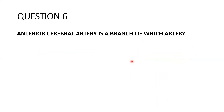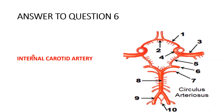Question six: the anterior cerebral artery is a branch of which artery? As mentioned in the previous question, the artery labeled number one is the anterior cerebral artery, and you can see it is a branch of the large internal carotid artery. So the anterior cerebral artery is a branch of the internal carotid artery.